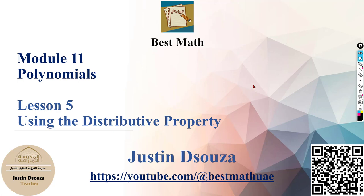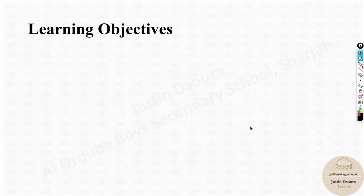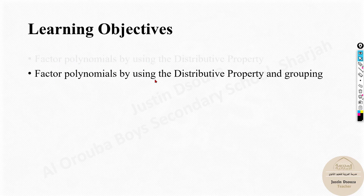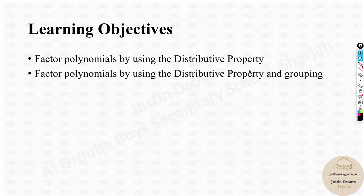Welcome back to the 11th lesson in the polynomials module. This lesson is about using the distributive property. The learning objectives are: to factor polynomials by using the distributive property, and to factor polynomials by using the distributive property and grouping — only two objectives.